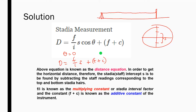The stadia constant may vary depending on whether an internal focusing or exterior focusing lens is used. If it is an internal focusing lens, the value for stadia constant is 0. But if it is an exterior focusing lens, we use a value specified for that type of lens — usually ranging from 0.2 to 0.5, and some have a value of 1.0.